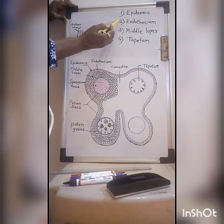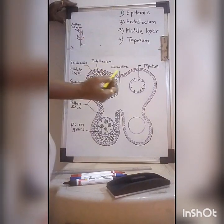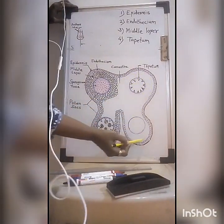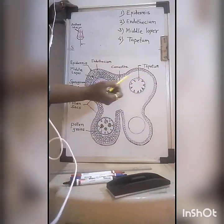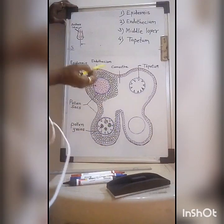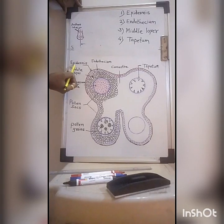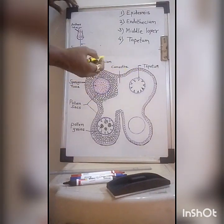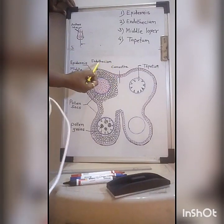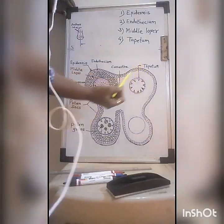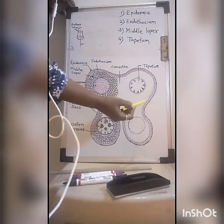Next to epidermis, below it, is the second layer called endothecium. In the diagram this is drawn with a blue marker — you can see the blue layer of cells throughout. Epi means outer and endo means inner, so the outer one is epidermis and the inner one is endothecium. The basic difference is that epidermal cells are flat cells, whereas endothecial cells are slightly elongated.